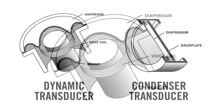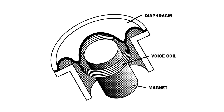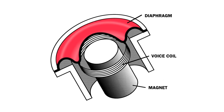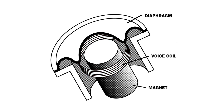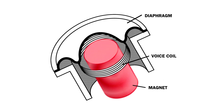In a dynamic microphone, sound waves strike a thin plastic diaphragm and cause it to vibrate. A coil of wire attached to the back of the diaphragm vibrates along with it. As the coil moves back and forth, it passes through a magnetic field created by a magnet, which generates an electrical signal that corresponds to the sound.